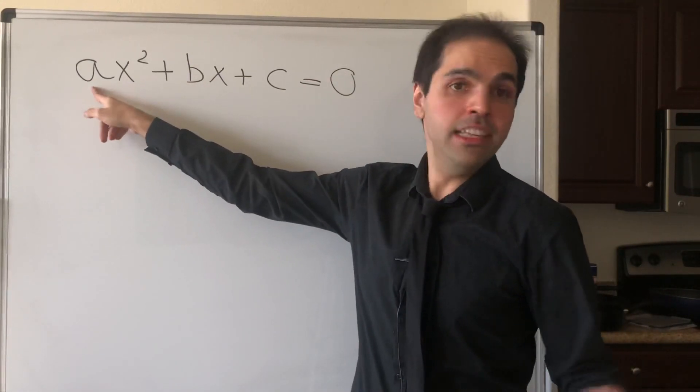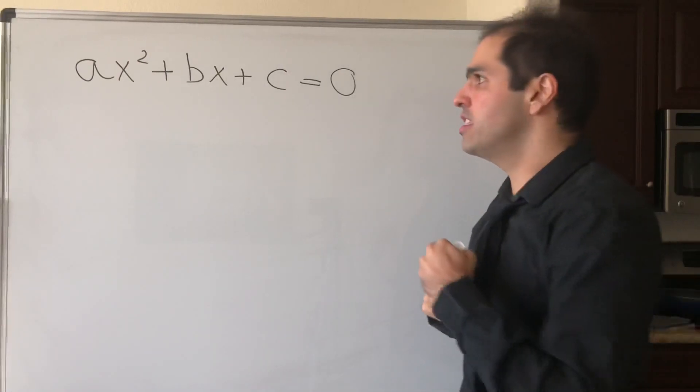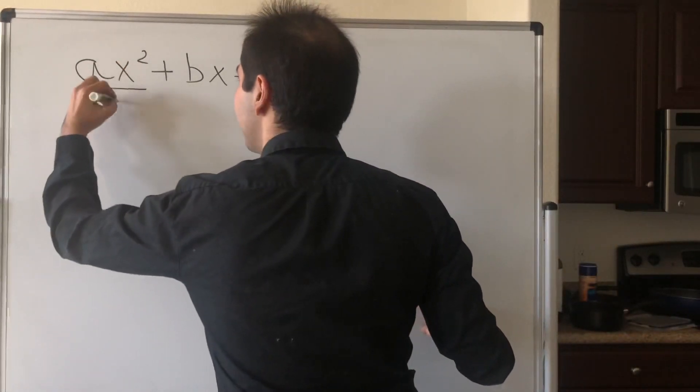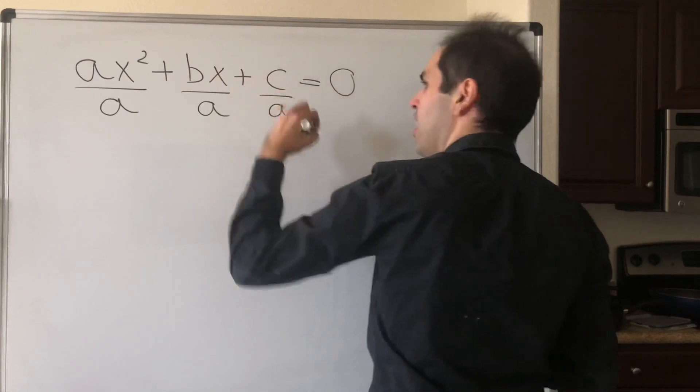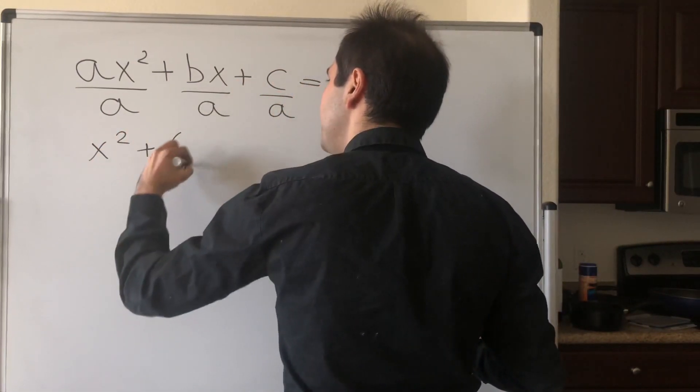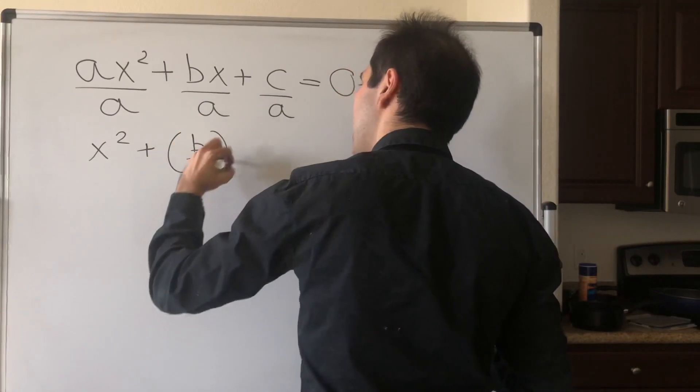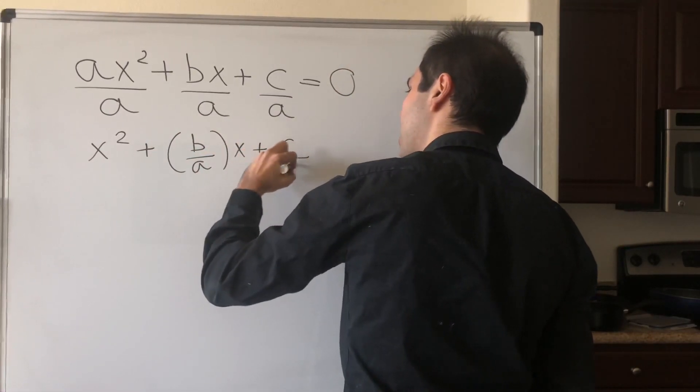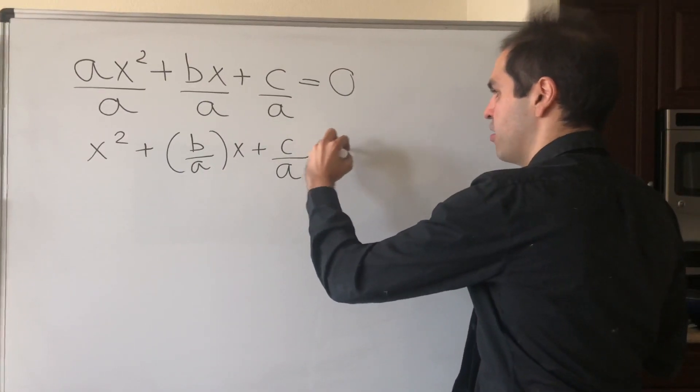Now, because a isn't always one, let's just divide this by a to get a leading coefficient of one. What we get is x² + (b/a)x + c/a = 0.